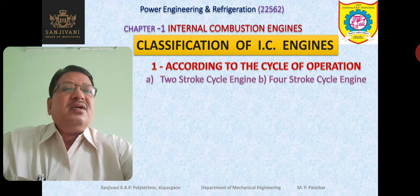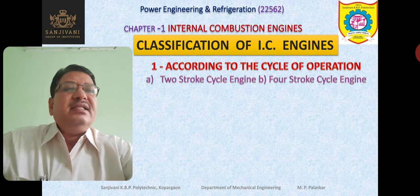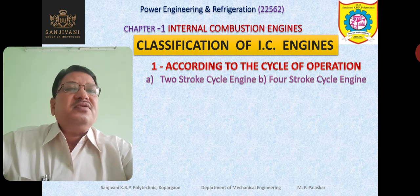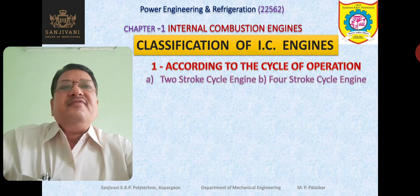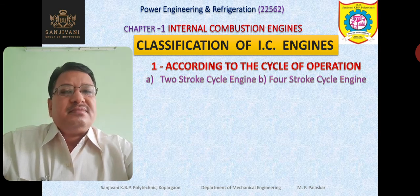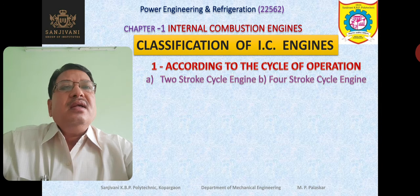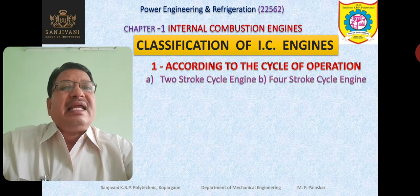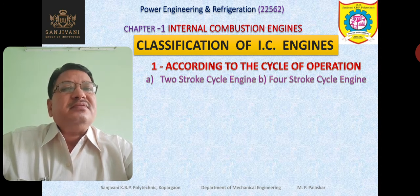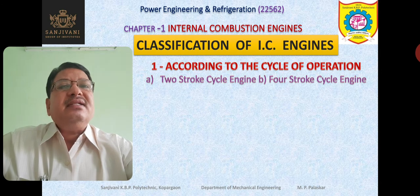It may be a two-stroke cycle or four-stroke cycle engine. In a two-stroke cycle engine, in one cycle we have two strokes of the piston. In one cycle we have one complete revolution of the crankshaft. So two strokes means one revolution — in one revolution one cycle is completed.